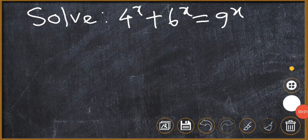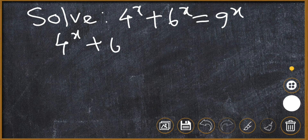We have to solve the given equation: 4 to the power x plus 6 to the power x is equal to 9 to the power x, and we have to find the value of x.